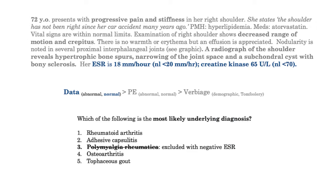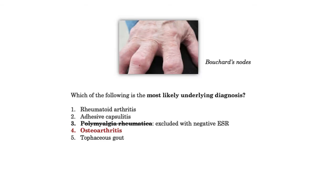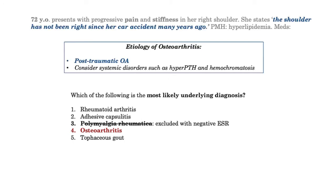It is safe to say that this patient does not have PMR. Coming back to the original question stem, we have an elderly patient with joint pain and stiffness, an exam consistent with osteoarthritis, and a definitive radiograph. All these features support the correct answer: osteoarthritis. The graphic reveals Bouchard's nodes, which are also consistent with osteoarthritis. Returning to the information about the motor vehicle accident, the question writer was informing us why she has osteoarthritis in the shoulder — post-traumatic OA, which is the most common secondary cause. Other causes include hyperparathyroidism and hemochromatosis, among the more commonly mentioned.